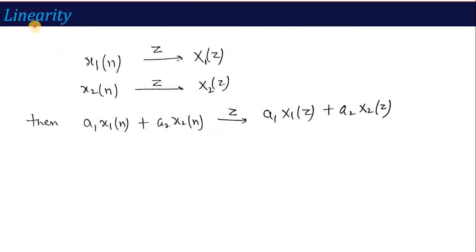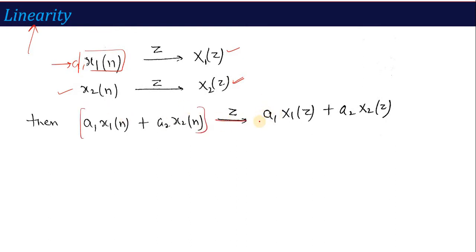The first property of Z-transform is the Linearity Property. It says: if you have signal x1(n) whose Z-transform is X1(z), and a second signal x2(n) whose Z-transform is X2(z), then if you want to calculate a1*x1(n) + a2*x2(n), the Z-transform of this complete signal is a1*X1(z) + a2*X2(z). This type of property is called the linearity property.